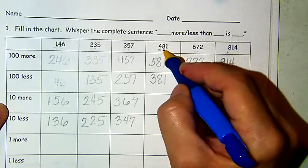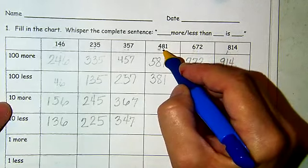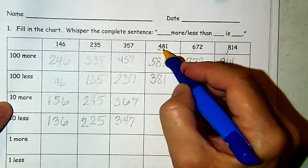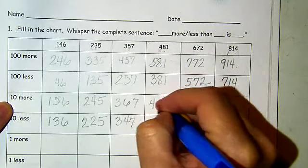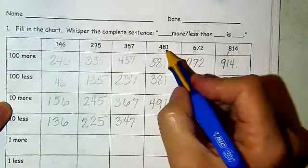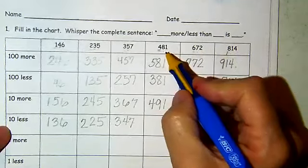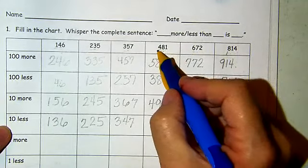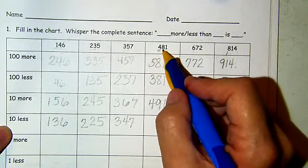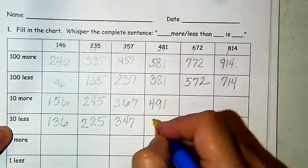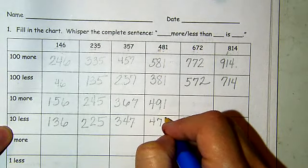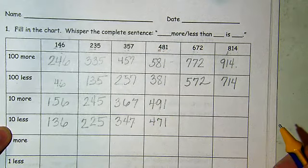481 — we have eight in the tens place. 10 more: it's going to be nine — 491. 10 less than 481 — one 10 less than eight tens — it's going to be 471.